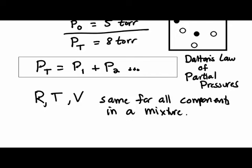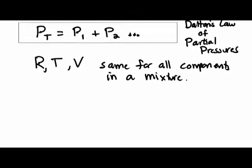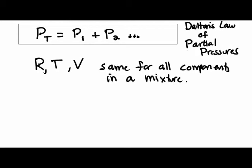This allows us to write some interesting things with the ideal gas law and create another equation that we will use. Let's look at a particular component, like the pressure of the shaded gas. We can say PV = nRT, where n would be the number of moles of the shaded species.